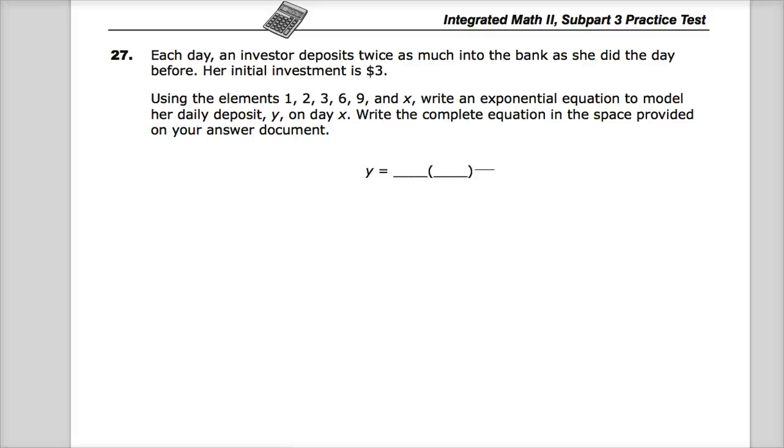This is question number 27 from the Integrated Math 2 Practice Test, subpart 3. Each day an investor deposits twice as much money into the bank as she did the day before. Her initial investment is $3.